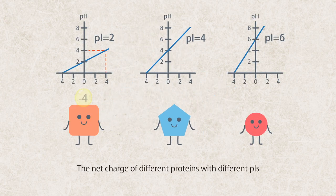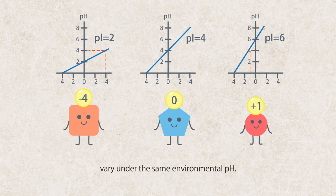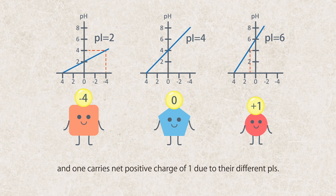The net charge of different proteins with different PIs vary under the same environmental pH. In this example, where the pH is 4, one protein carries net negative charge of 4, one is zero net charge, and one carries net positive charge of 1 due to their different PIs.